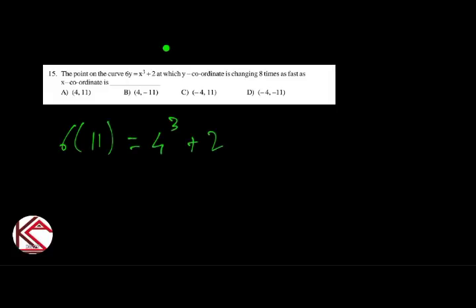Question 15: Find the point on the curve 6y = x³ + 2 at which the y-coordinate is changing 8 times as fast as the x-coordinate. We check which of the given points satisfies the curve equation. Testing (4, 11): 6×11 = 66 and 4³ + 2 = 66. So option A, (4, 11), is the required point.